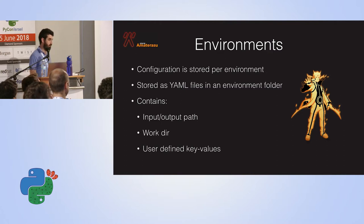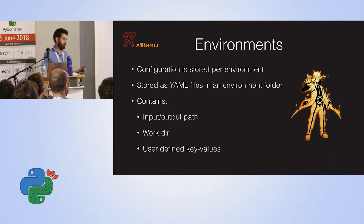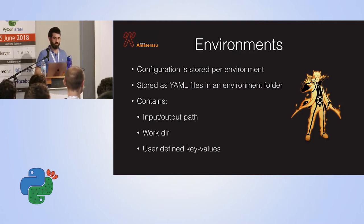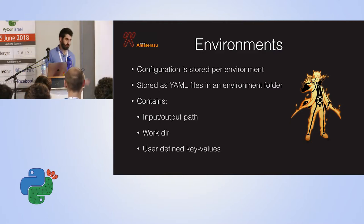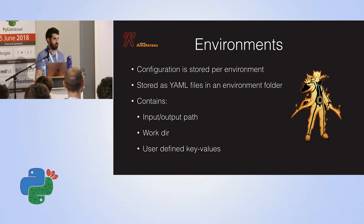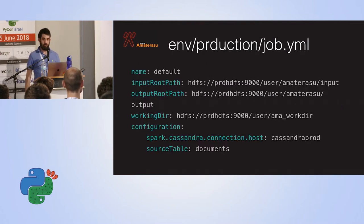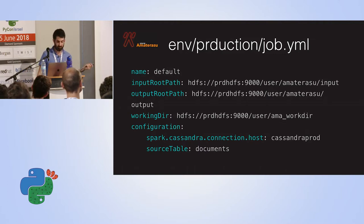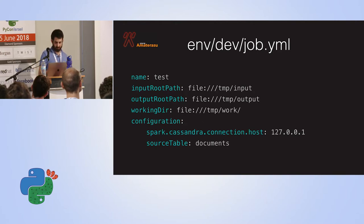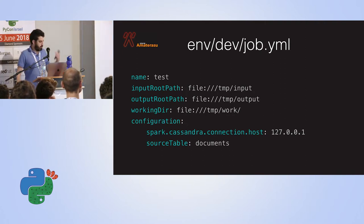Environment files are stored as YAML files. What we require you to define is really only three things: the input and output paths — input is where you want to get data from as input for the job, like HDFS or somewhere in your local file system if running in development; output path, same thing; working directory, for example somewhere in HDFS. And anything you want to pass into the job as environment variables. This enables us to give you a seamless running environment.